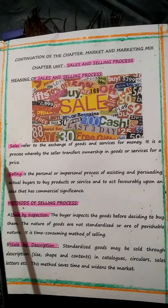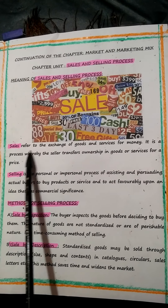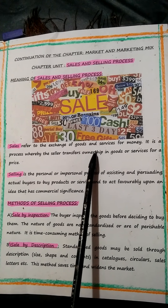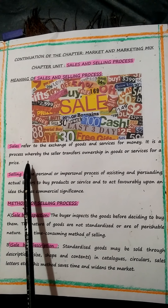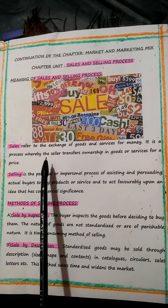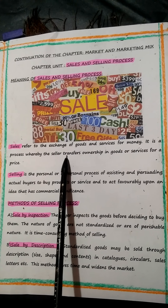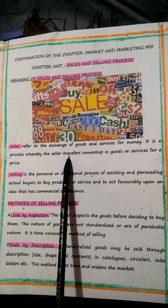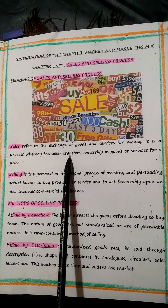Let us move on to the meaning of the word 'sales.' Sales refer to the exchange of goods and services for money. It is a process whereby the seller transfers ownership in goods or services for a price. It is nothing but exchange of goods and services for money. Sales seeks to convert the product into cash — that is another point you can add. And sales orient profits through sales volume. Without sales, nothing happens.